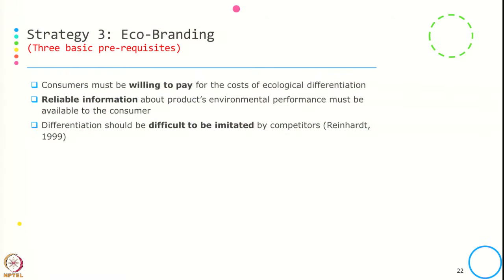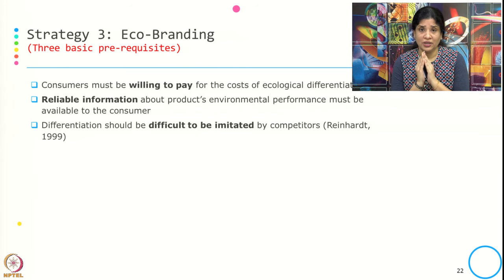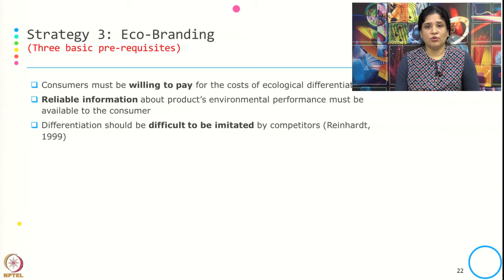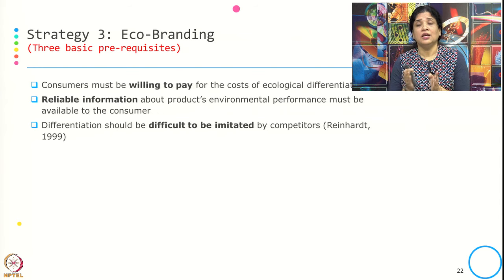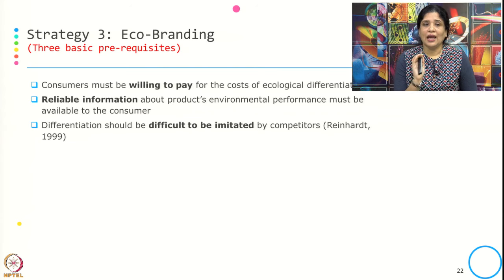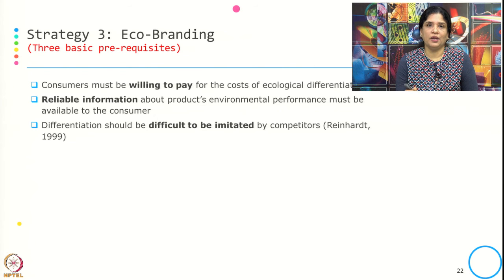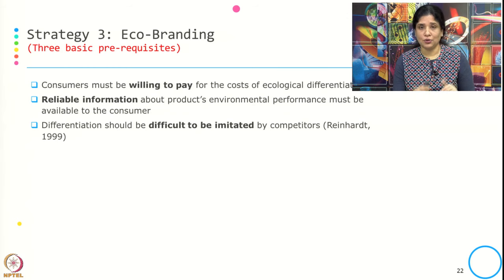There are three basic prerequisites identified by Reinhardt in 1999 to make an environmental product successful. First, consumers must be willing to pay for the cost of ecological differentiation. Second, reliable information about the product's environmental performance must be available to the consumer — there should be transparency and a way to communicate that to consumers. Third, the differentiation should be difficult to imitate by competitors — there should be a barrier to imitation.